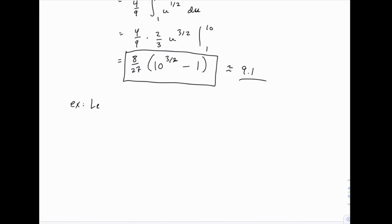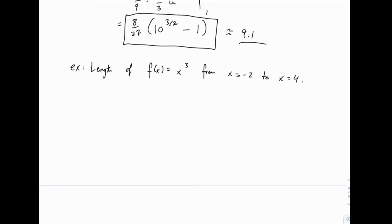Let's say we want to find the arc length of f of x equals x cubed, a relatively simple function, from x equals negative 2 to x equals 4. But it's going to turn out that this is not one that we can do by hand when it comes to the integral. So the arc length would be the integral from negative 2 to 4 of the square root of 1 plus the derivative of x cubed. Of course the derivative of x cubed is 3x squared, and then we square that function. So it's 1 plus the derivative squared, dx.